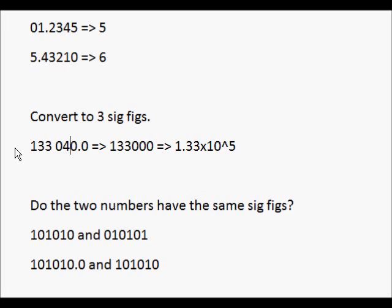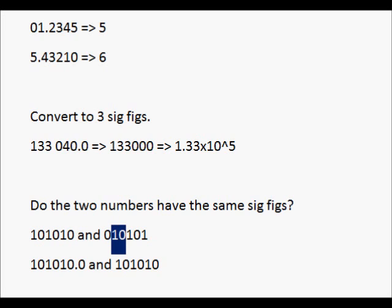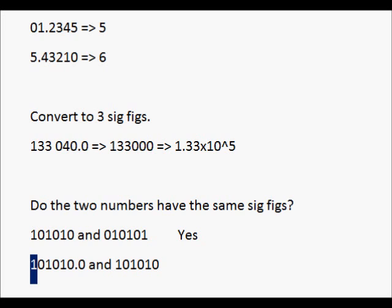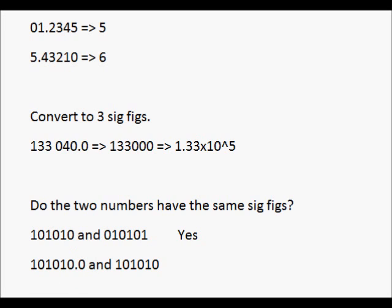For our last example, we're going to compare two numbers and see if they have the same significant figures. This one has 1, 2, 3, 4, 5 significant figures versus 1, 2, 3, 4, 5 — 5 significant figures. Therefore, the answer is yes. And for the last part, it's 1, 2, 3, 4, 5, 6, 7 significant figures versus 1, 2, 3, 4, 5 — so the answer is no.